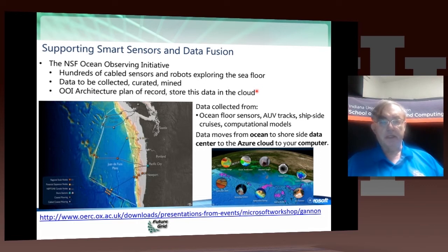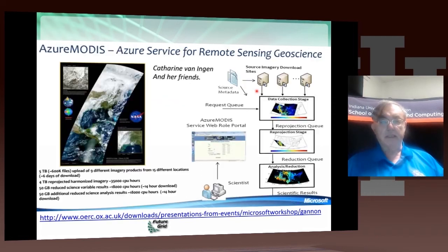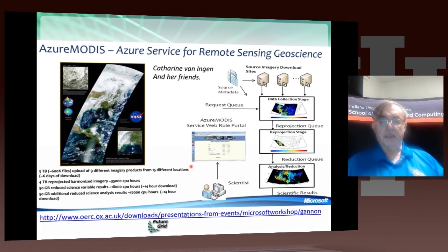You don't just have sensors in the oceans — you have sensors in the forest, in your cars, in your homes, and in you. All of those are going to go up into the cloud and get analyzed. Another related area is remote sensing geoscience, where different imagery from many locations is processed to form complete pictures. These are naturally pleasingly parallel applications, since each image can be processed separately, and they run very well on clouds — in this case, the Azure cloud.